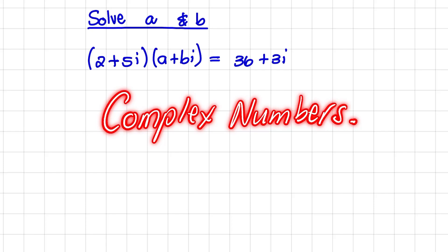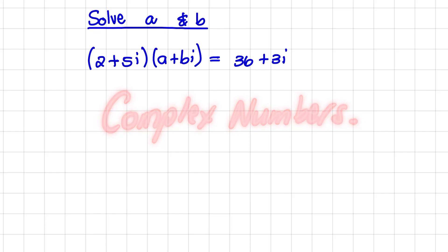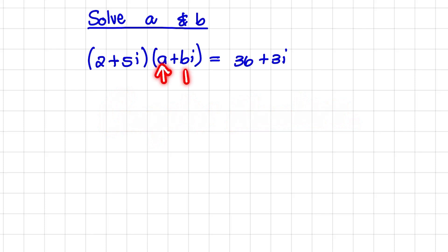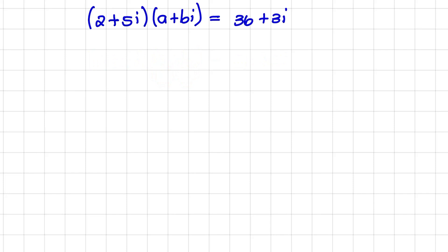We are going on with our series on complex numbers, and in this video we want to find the values of a and b respectively. We are given that (2 + 5i)(a + bi) = 36 + 3i.